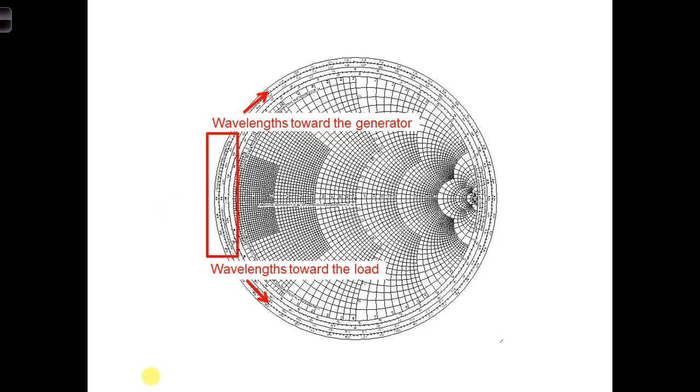The Smith chart also has two pairs of scales along the very outside of it. We can use the outer pair of scales to rotate an impedance a set distance down the transmission line, measured in number of wavelengths. So that means if you get a distance in meters, you have to transform it to wavelengths before you can use the Smith chart.